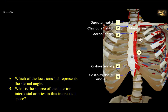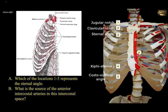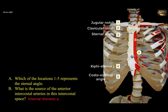What is the source of the anterior intercostal arteries in this intercostal space? This is the fourth intercostal space, counting from the second costal cartilage: second, third, then fourth. In the upper six intercostal spaces, the anterior intercostal arteries are branches of the internal thoracic artery, which passes vertically on the side of the sternum and provides anterior intercostal arteries until the sixth intercostal space, where it splits into the superior epigastric and musculophrenic arteries. So in this space, the anterior intercostal arteries are derived from the internal thoracic artery.